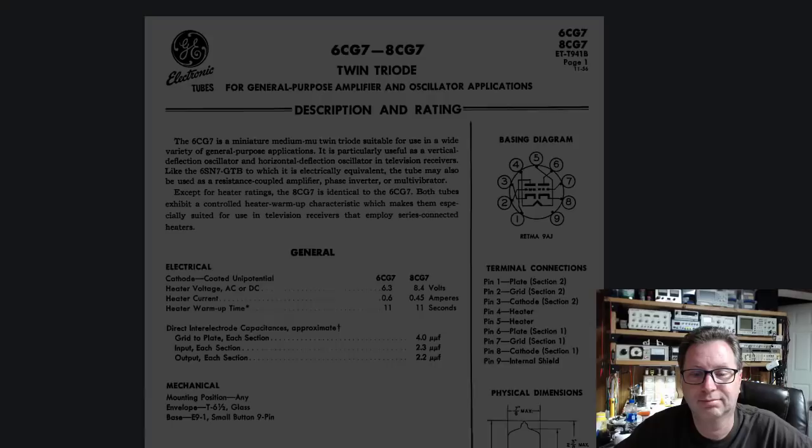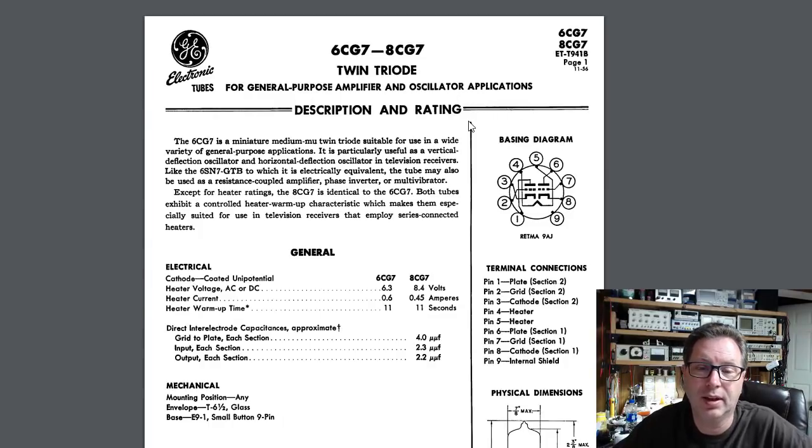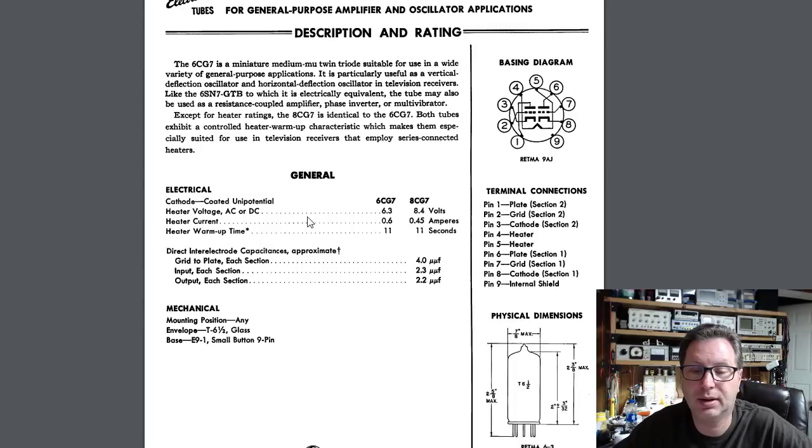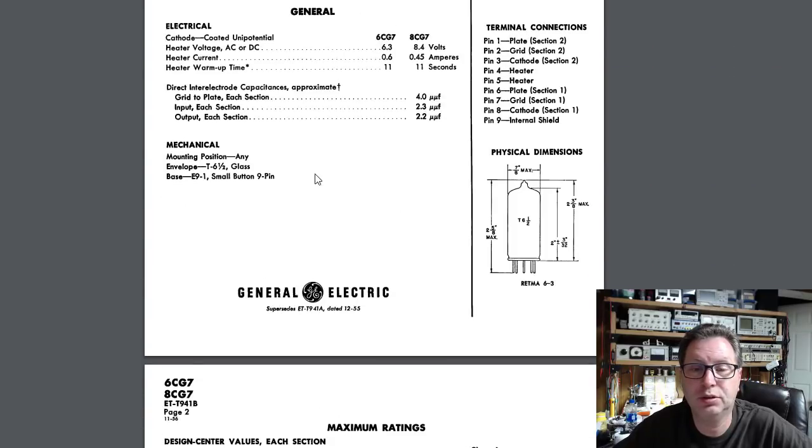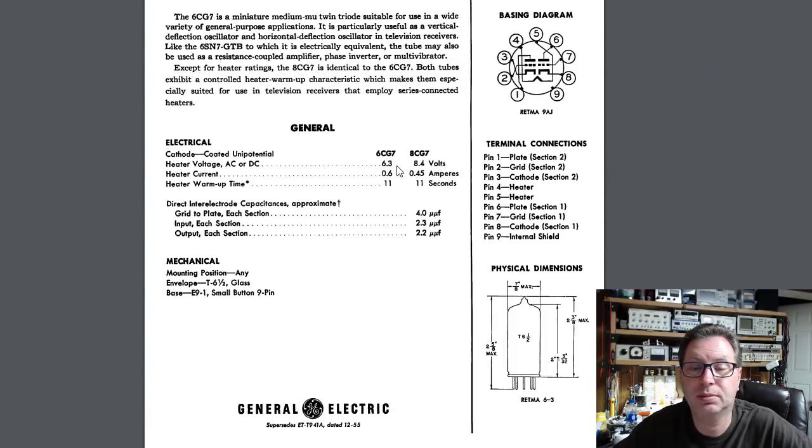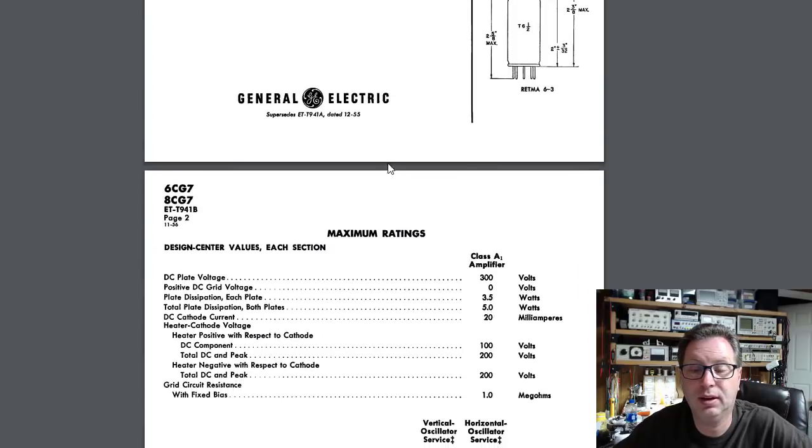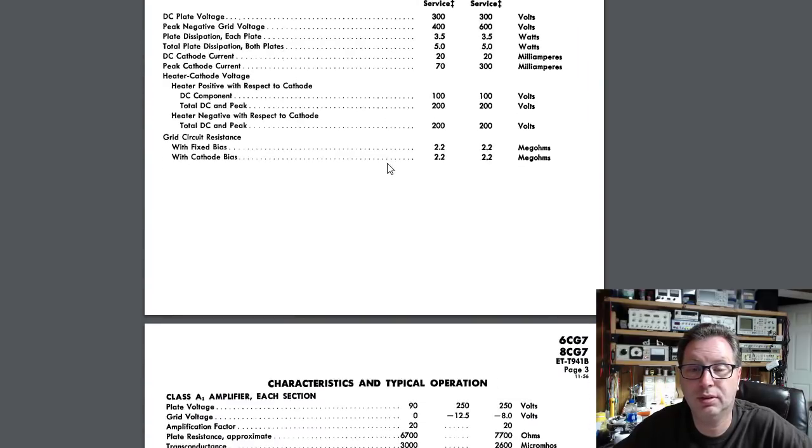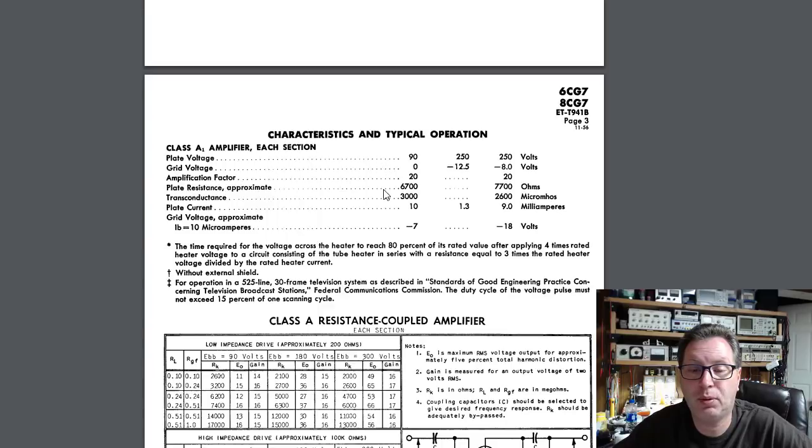You can see here the data sheet for the 6CG7. Notice it's a nine-pin diagram here, and this tube operates off of 6.3 volts. One last thing, typical operation here in a class A amplifier, which is how we would be running this, you get an amplification factor of 20 on this tube.